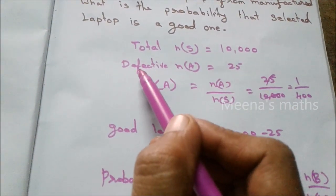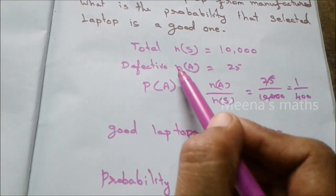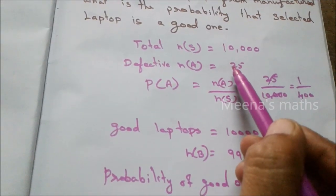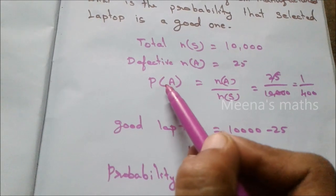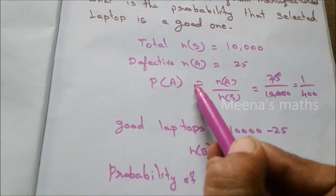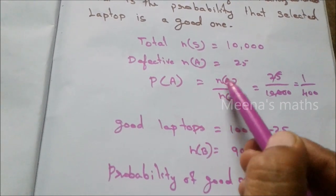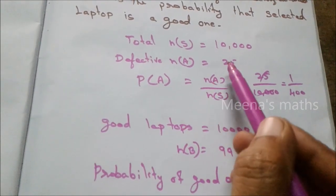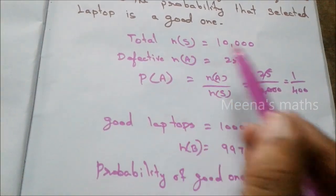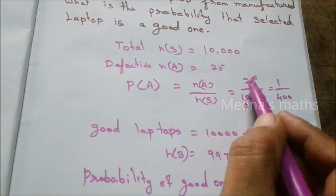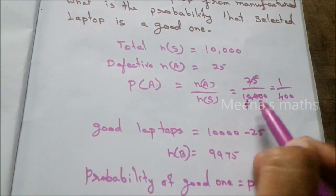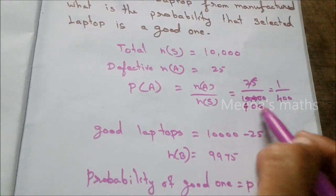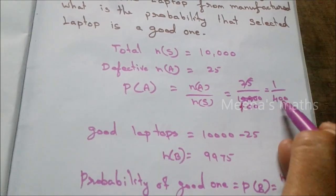Defective means faulty. The probability of a defective laptop: N of A by N of S. Number of defective laptops N of A equals 25. So probability of defective equals 25 by 10,000, which simplifies to 1 by 400.